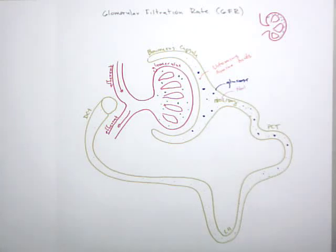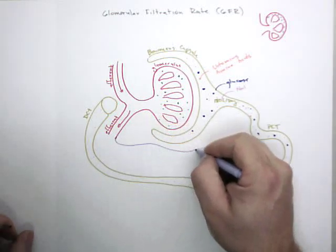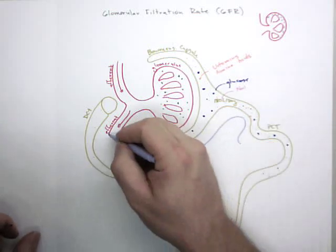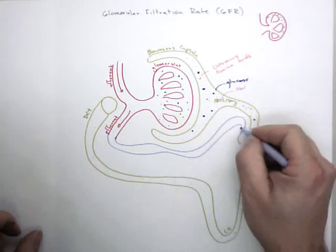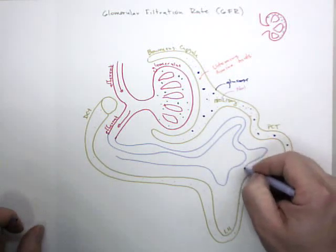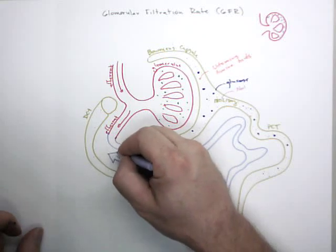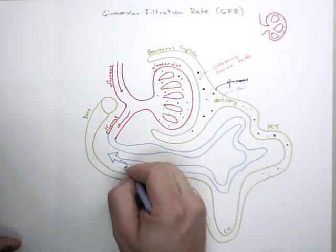What you have to do is you have to pick that back up. First of all, where you pick it back up is the efferent gives rise to a capillary bed called the paratubular capillaries. And this is going to wind its way around and pick things back up. Eventually, this is going to head back to systemic circulation.